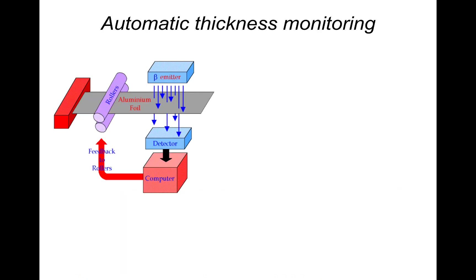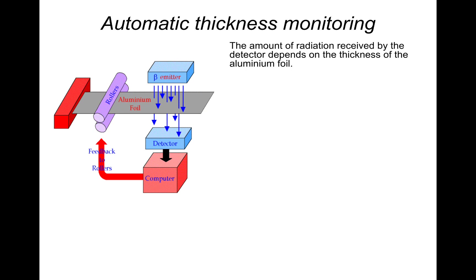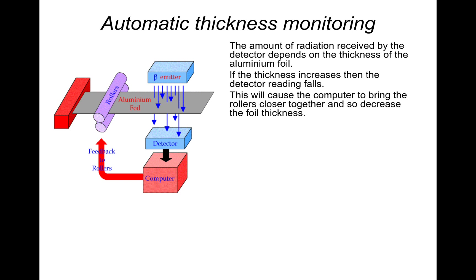One use is automatic thickness monitoring. Aluminium foil, such as the kind found in your kitchen, is not quite uniform in its thickness. A setup is used with aluminium foil, rollers, and a beta emitter. Beta radiation is emitted towards a detector. If the aluminium foil gets too thick, the amount of beta radiation received by the detector decreases. If it is too thin, the amount that gets through increases. This is linked to a computer with feedback to the rollers, which can continuously move closer together or further apart.